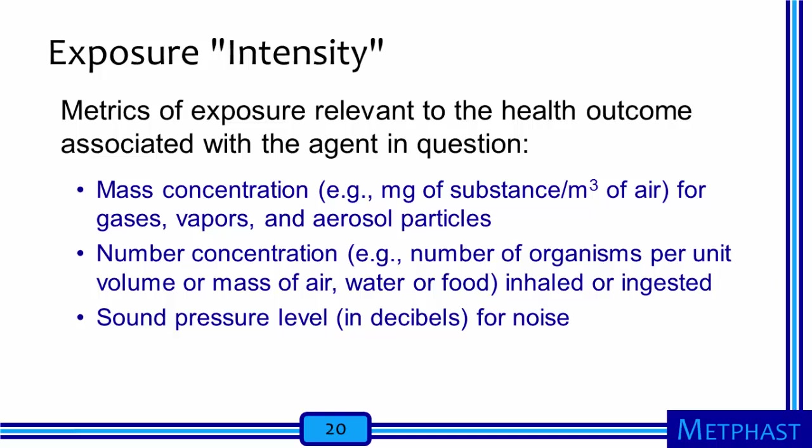When we talk about exposure intensity, there are various metrics we can consider. The best metrics are ones relevant to the health outcome associated with the agent being investigated. We can consider mass concentration — for example, the milligrams of some substance per cubic meter of air — which is a common metric for gases, vapors, and airborne particles. For number concentrations, the number of microorganisms per unit volume of air, water, or food is a common example, as is the measurement of airborne fibers in terms of the number of fibers per volume of air. Intensity is measured for sound pressure levels using decibels, the basic unit for measuring exposures to noise.